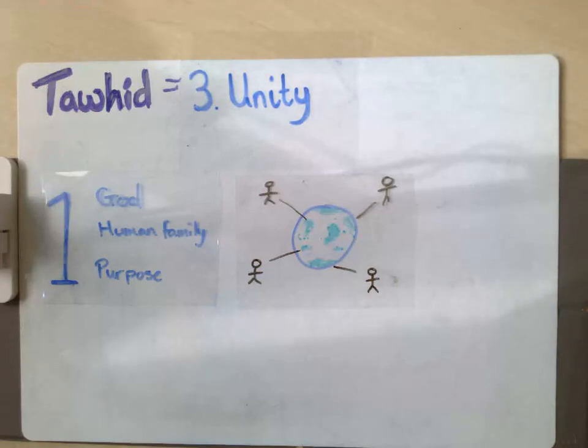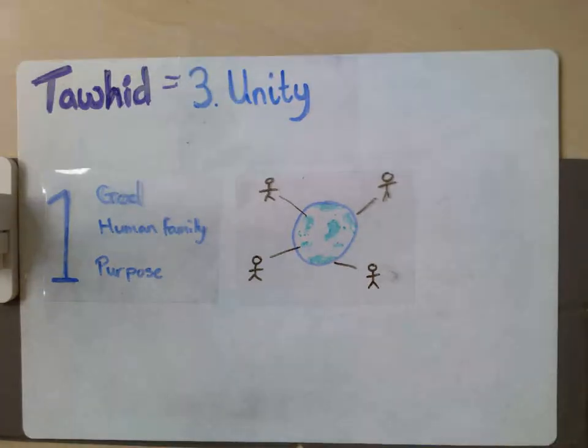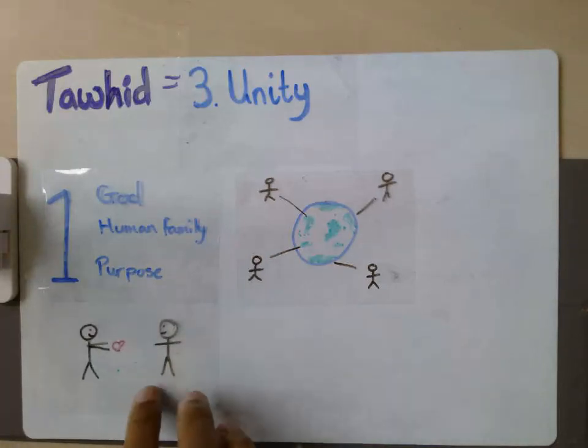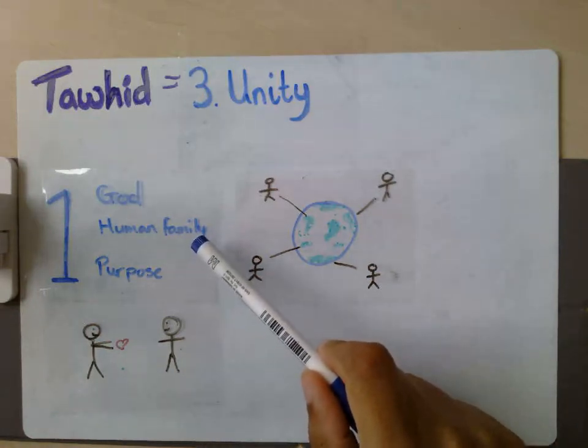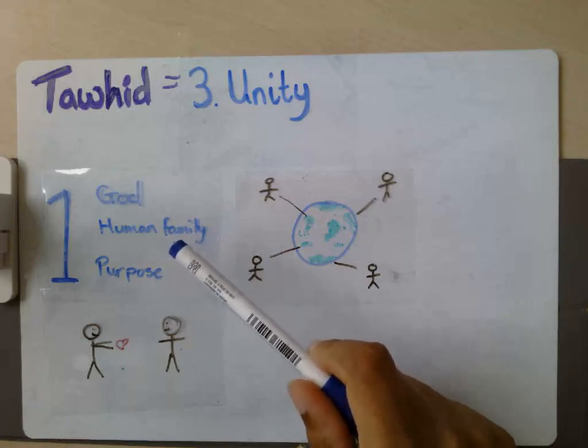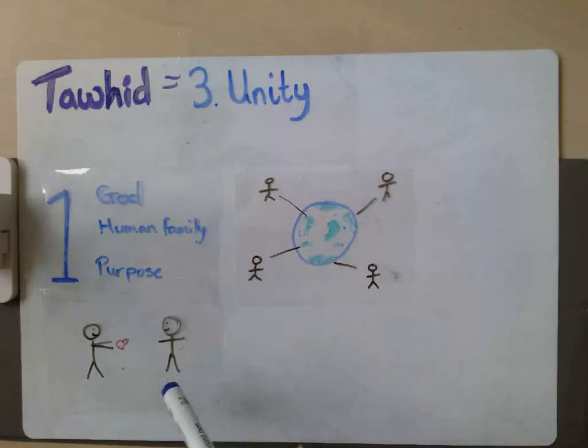Muslims do believe that to keep people remembering this idea of their one purpose. In terms of how this concept of unity might influence Muslims, well two obvious ways are that you're going to treat all of humanity and all humans that you interact with as though you are part of the one human family. You're not going to discriminate or treat people unfairly because of who they are, where they're from. We're all one human race.